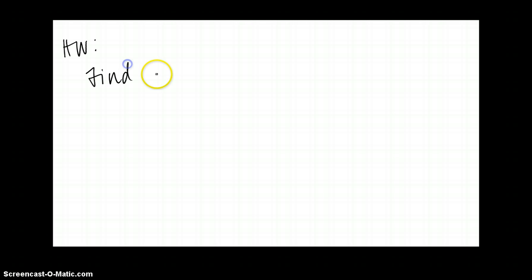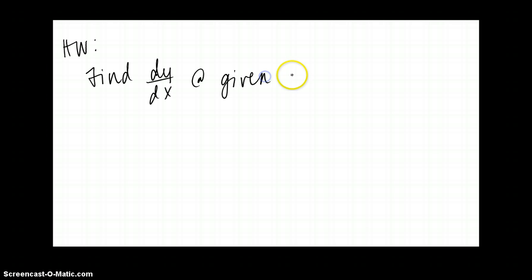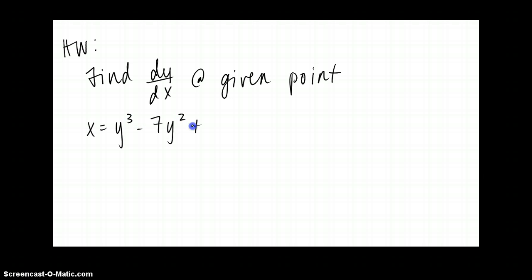For homework, find the derivative at the given point. The equation is x = y³ − 7y² + 2 at the point (−4, 1). You'll need implicit differentiation to do this.